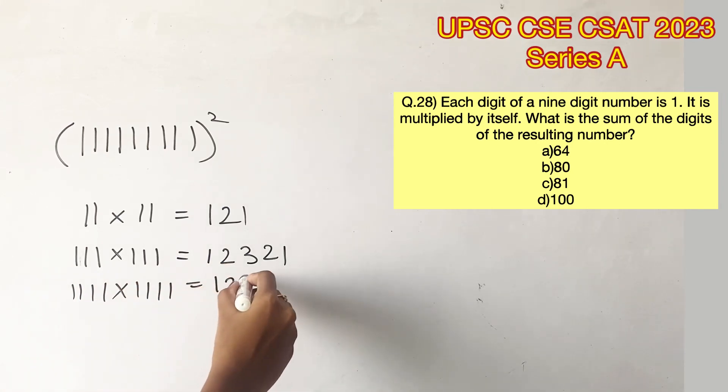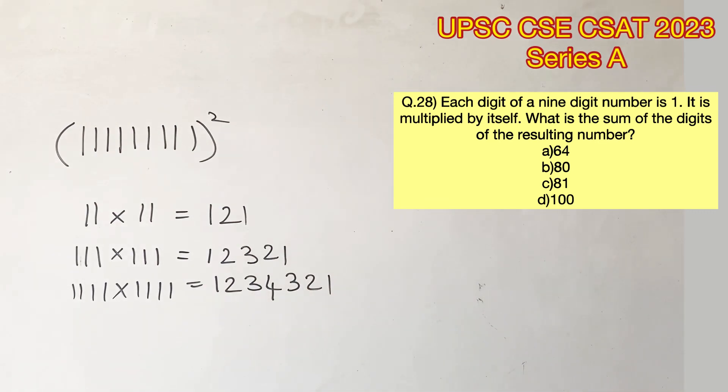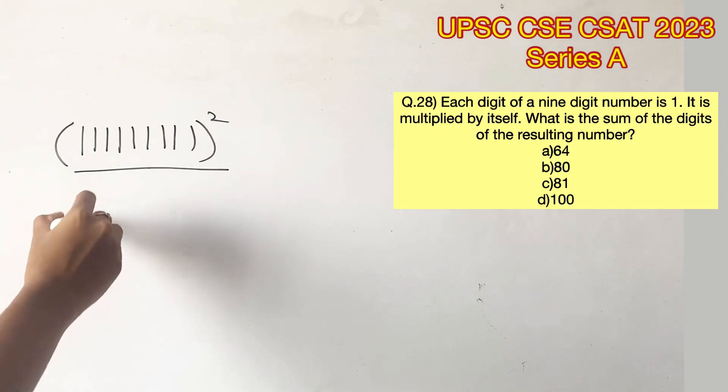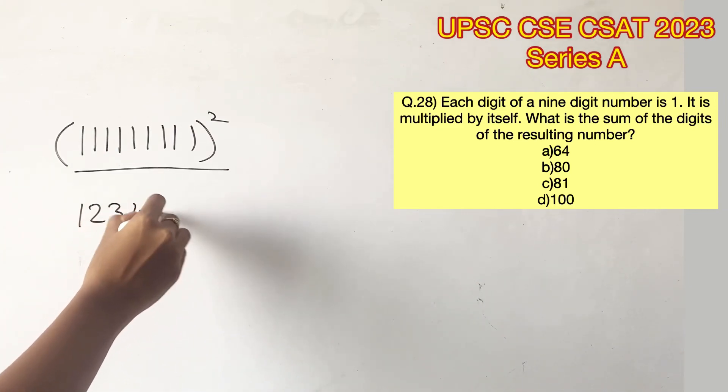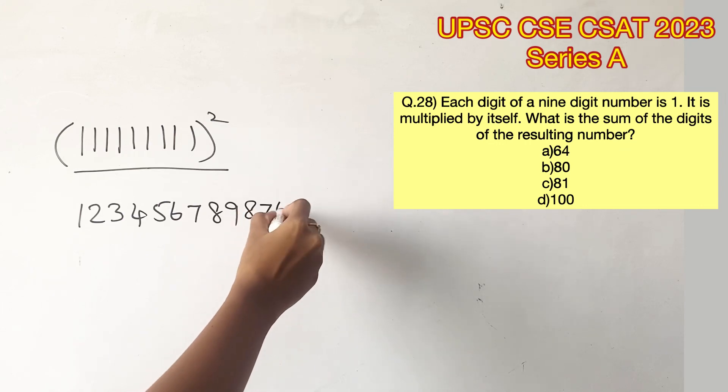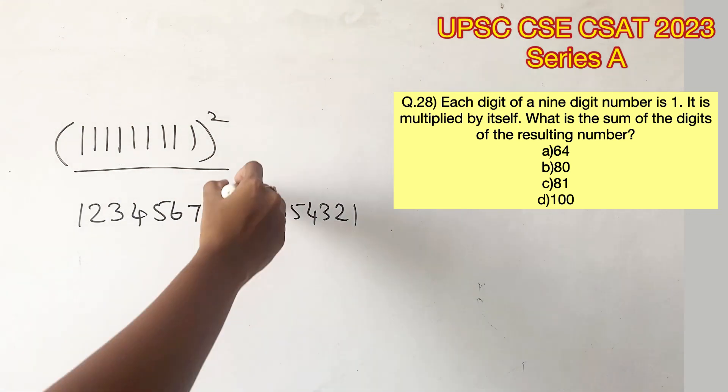So if you take 1111 and multiply by itself, we will get 1234321. Now in the question, 1 is written 9 times. When you multiply it by itself, you will get 12345678987654321. Now all we have to do is add these digits up. Let's add it in batches of 10. It will be easier.